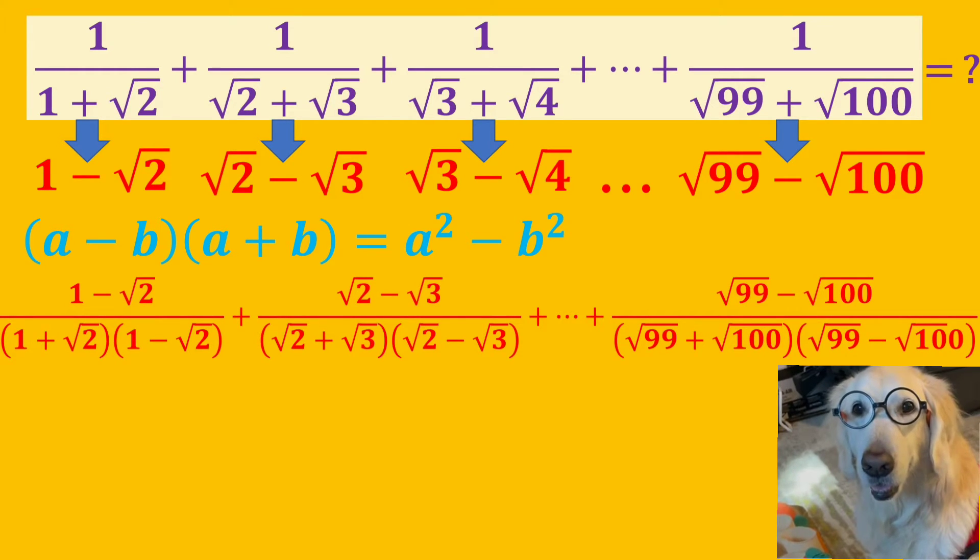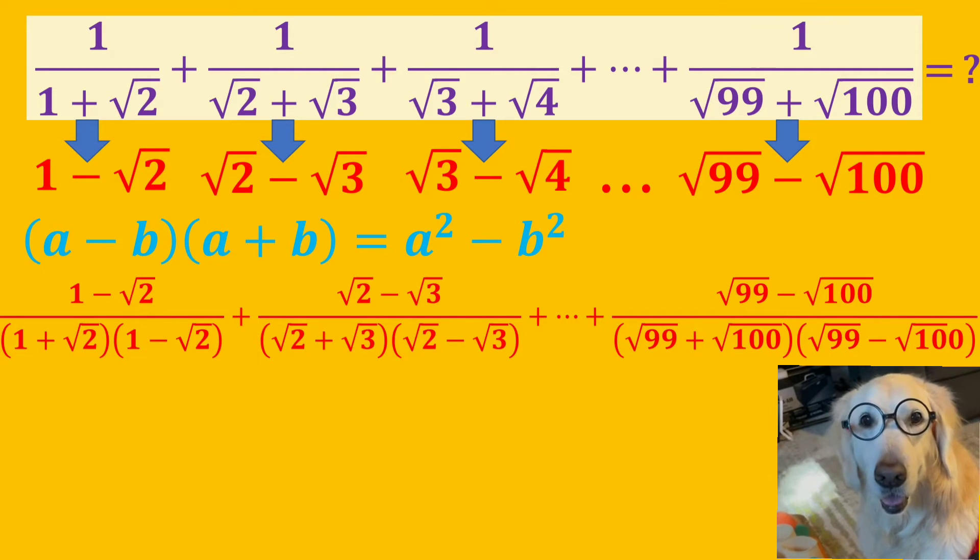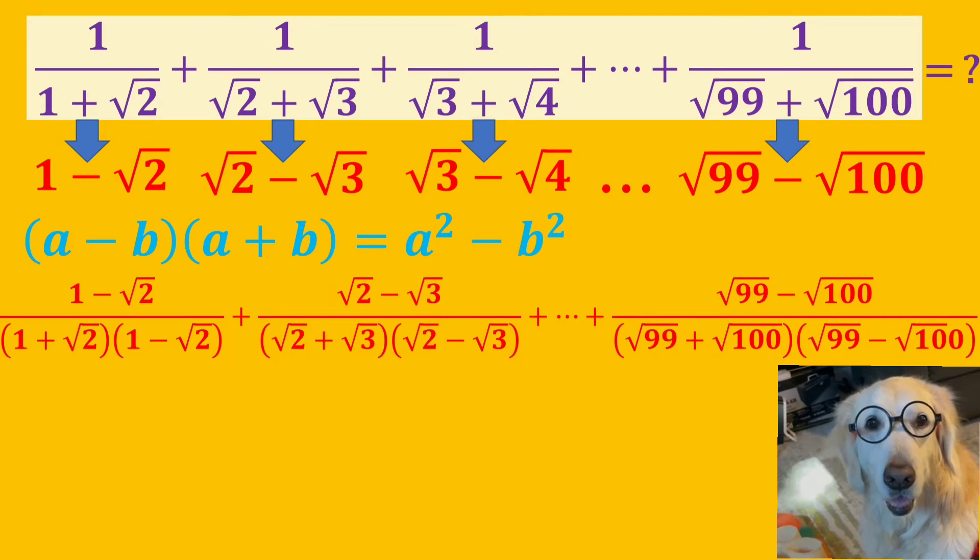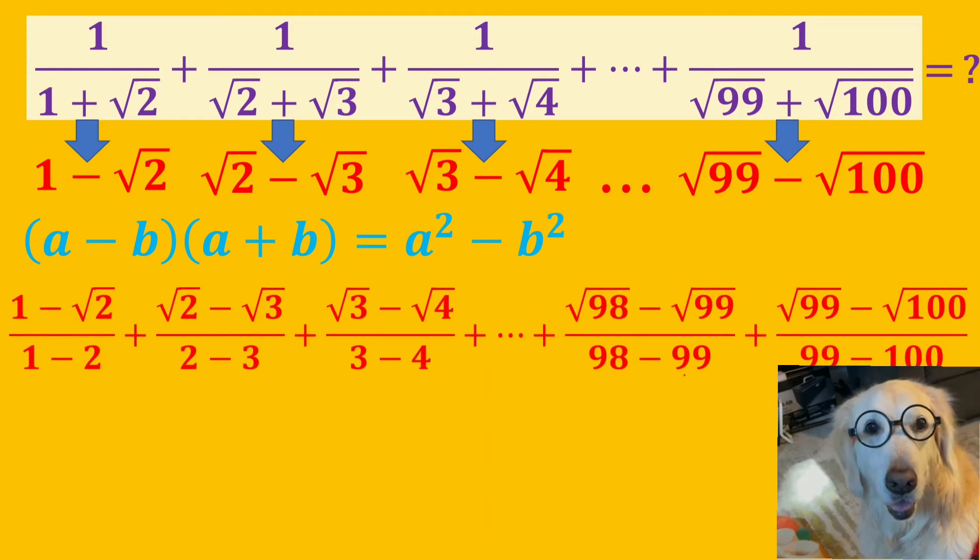After multiplying the denominators with their conjugates, we see that they are in the form of difference of squares. Do you see the change in the denominators?